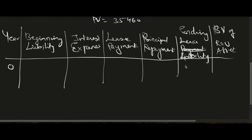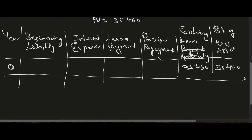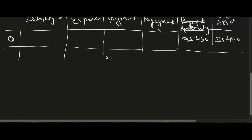For Year 0, the ending lease liability is 35,460 — as if the company borrowed 35,460. Correspondingly, the right-of-use asset is also recorded at 35,460, representing the asset the company has the right to use.